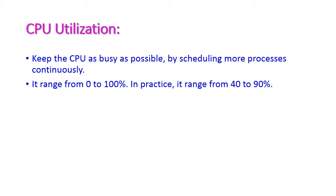The first criteria is CPU utilization. We have to keep the CPU as busy as possible by scheduling more processes continuously. The CPU utilization ranges from 0 to 100 percent — this is only theoretically. But when we come to practical, the utilization ranges from 40 percent to 90 percent because some process should always be executing on the CPU.